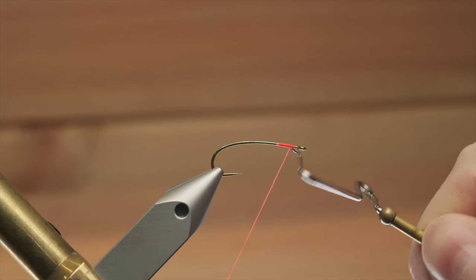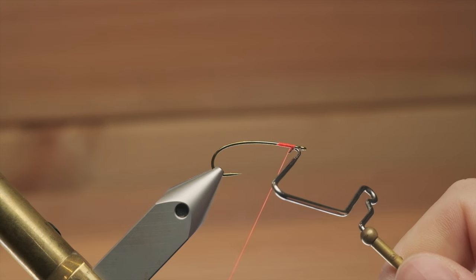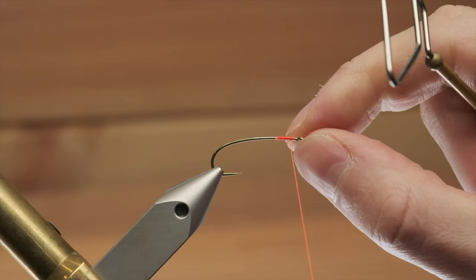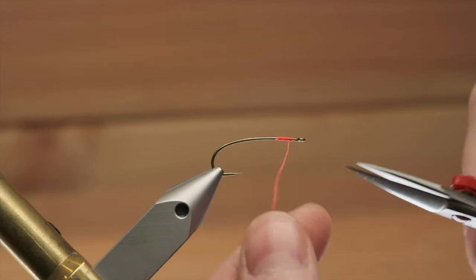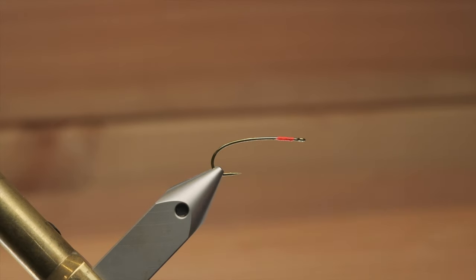Pull your thread down and when you're at your hook shank, release the hook, tighten it, take your scissors and trim away. And that's your whip finish.